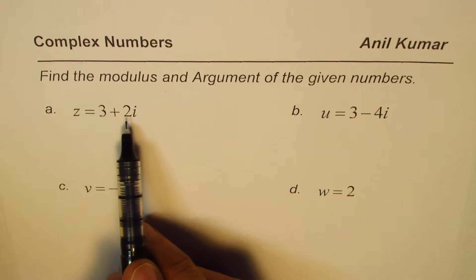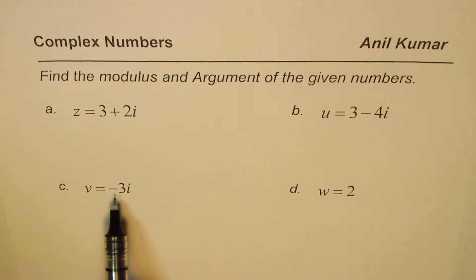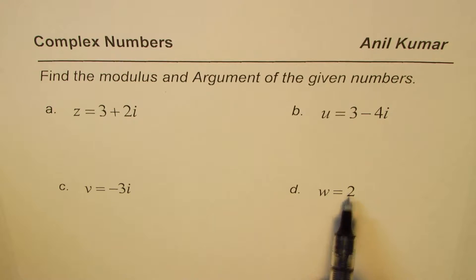Z equals to 3 plus 2i, B is U equals to 3 minus 4i, then we have V equals to minus 3i, D is W equals to 2. So this one has only the real part, this one has the imaginary part, and these ones are mixed, but all are complex numbers.